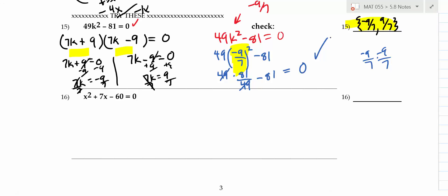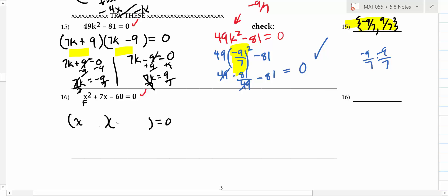You have to square first because of order of operations — you do the exponent before you multiply. Now let's do the next problem. One side is already zero, which is good. This one is a trinomial. The first term factors as x · x.